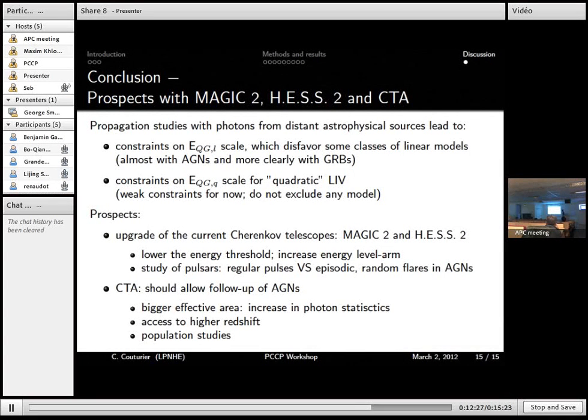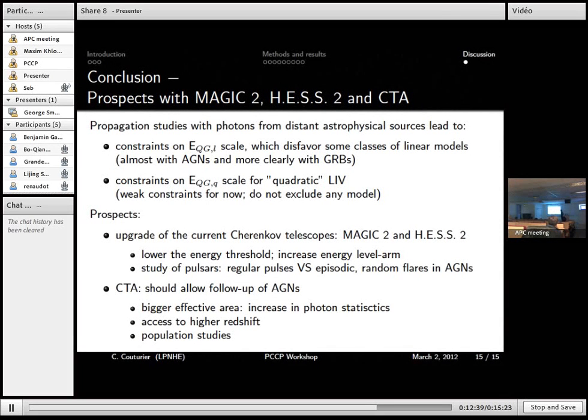What those upgrades will give us, they will give us access to a lower energy threshold. That means we'll have a bigger delta E, a bigger energy lever arm. And we might be able to study pulsars, like VERITAS did.